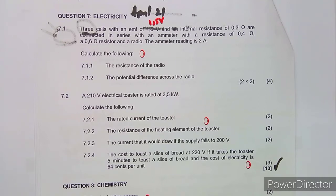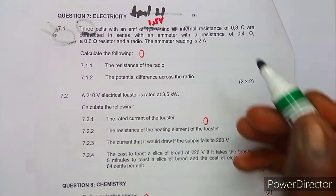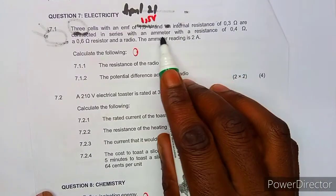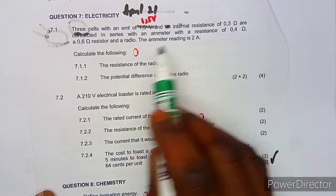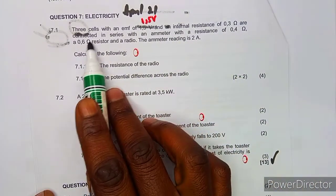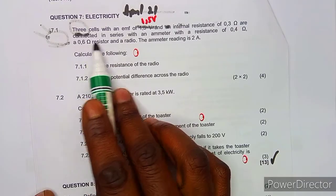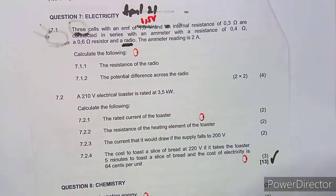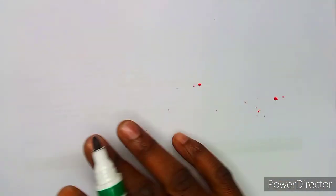The ammeter reading is 2 amps. Calculate the following: 7.1.1 — the resistance of the radio. As we can see from the resistors listed, the ammeter resistance and the 0.6 ohm resistor are given, but the resistance of the radio is not given.